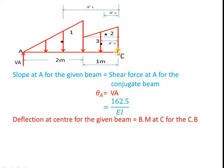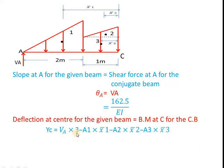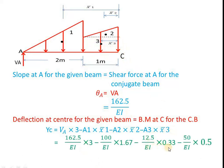We are also asked to calculate the deflection at C. The deflection at C for the given beam equals the bending moment at C for the conjugate beam. So YC = VA × 3 minus A1 × x1 bar minus A2 × x2 bar minus A3 × x3 bar. We have already calculated all A and x values. Substituting them gives YC = 291.375 by EI, which is the deflection at the center (point C) for the given beam.